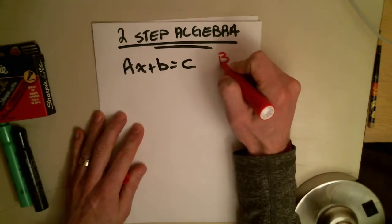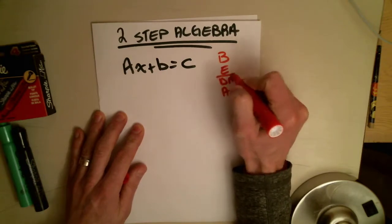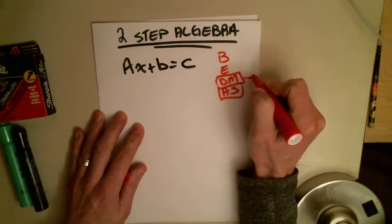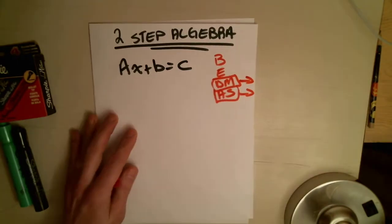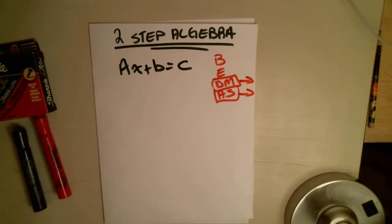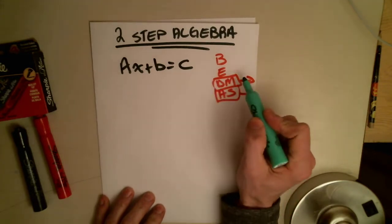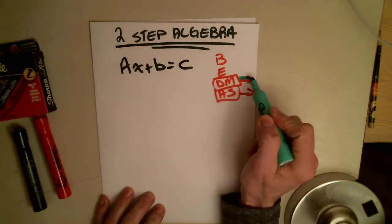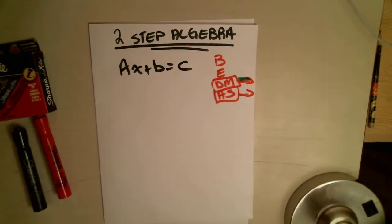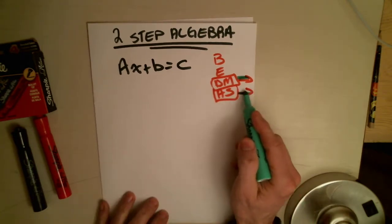Now, the key thing here is that we still have to go back to this awesome framework that we started the year, which is order of operations. And what I really want you to lock into here is the fact that division and multiplication are on the same level. Essentially, they're the same as addition and subtraction. They're on the same level.